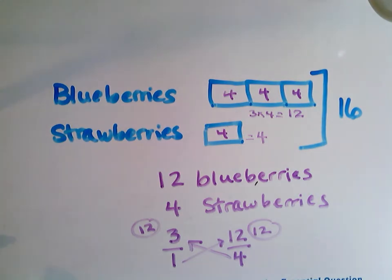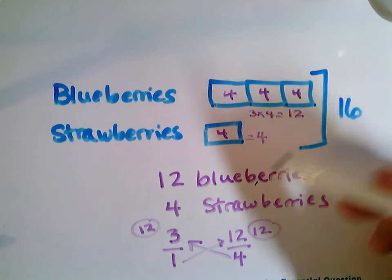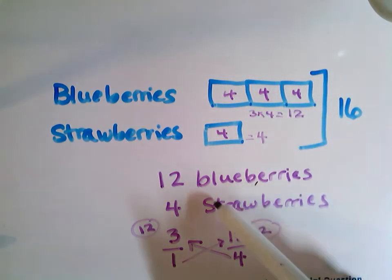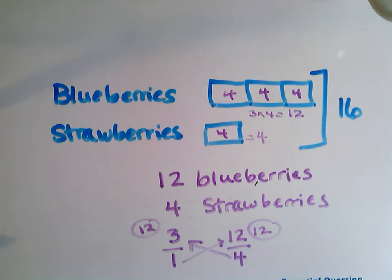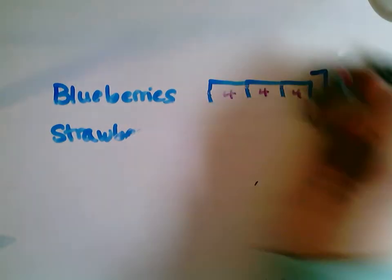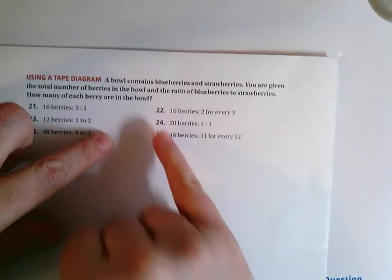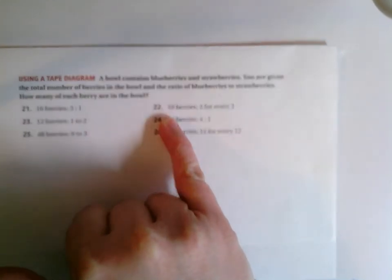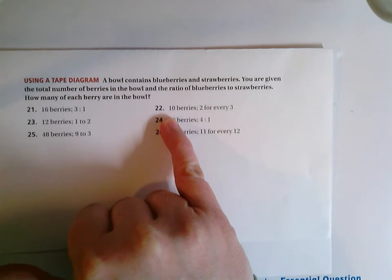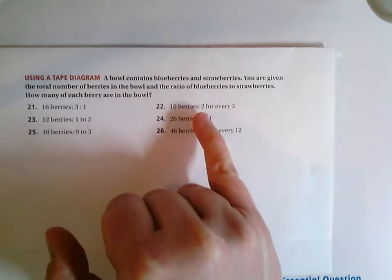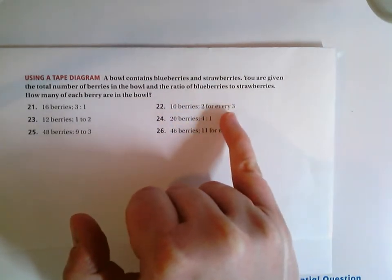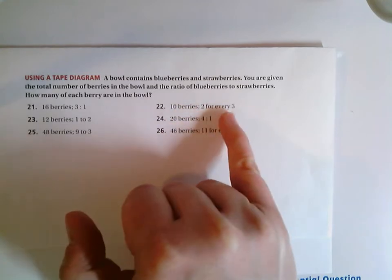So in this scenario of 16 berries with a three to one ratio, I would have 12 blueberries and four strawberries. Let's look at another scenario with the same type of problem. Now let's say I had 10 berries all together, and I have two blueberries for every three strawberries. My ratio is two to three. So let's see if we can draw that out.